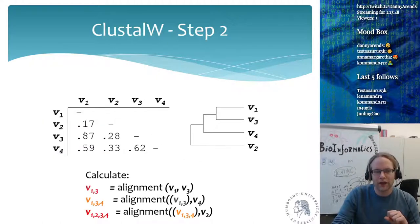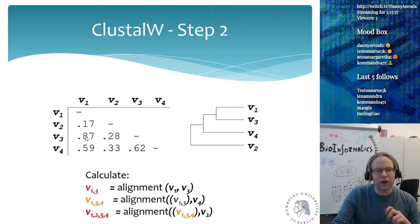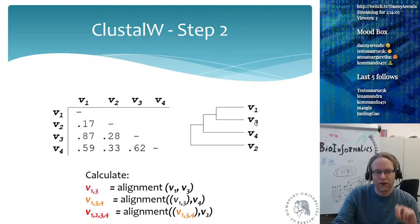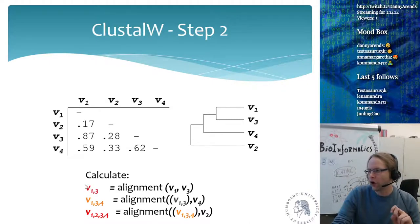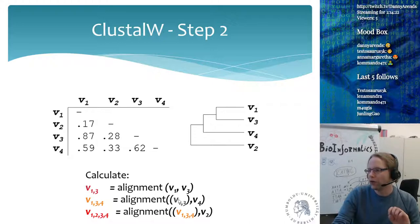For this little matrix, V1 and V3 are highly similar so they are branched together, and V4 is very similar to V1 and V3. The way it works is it first finds the two which are most similar — V1 and V3 — so it makes the alignment from V1 and V3 and creates a new consensus sequence between them.